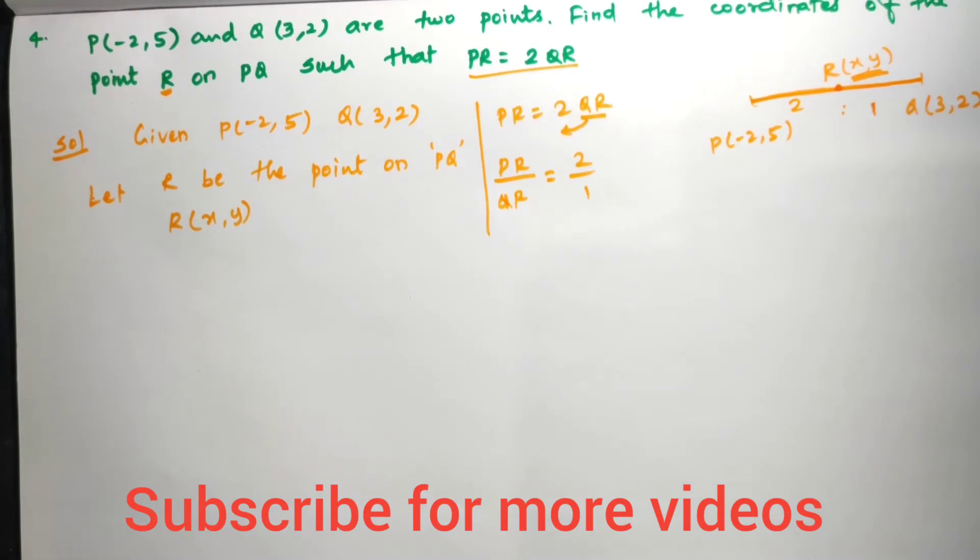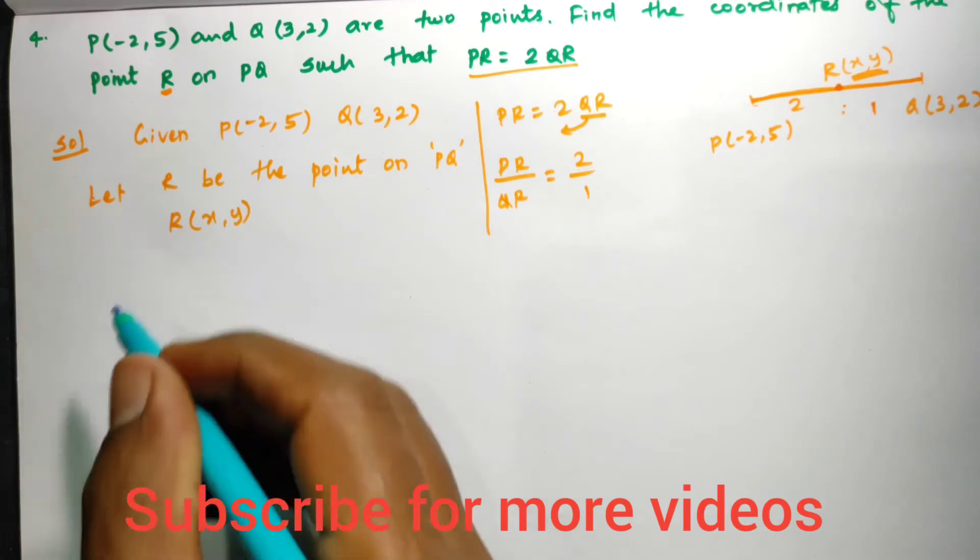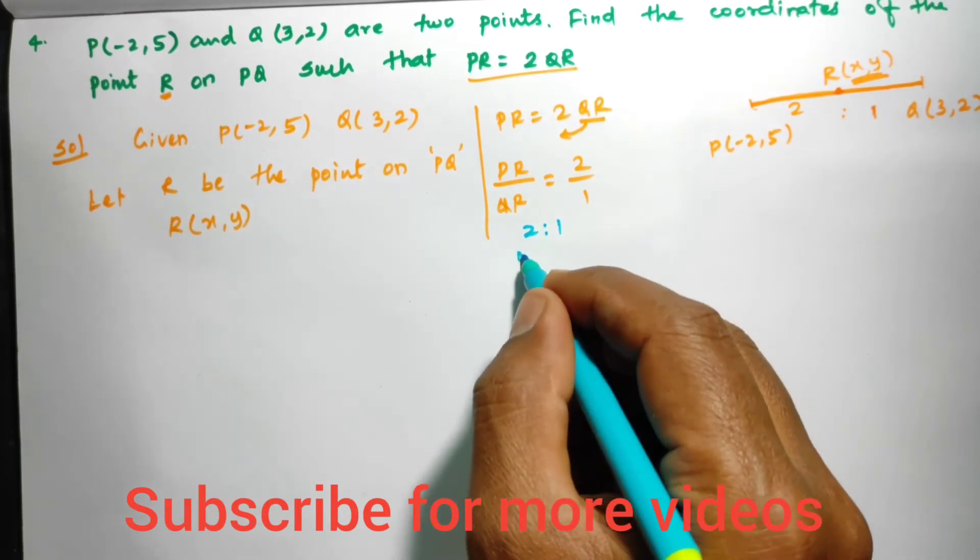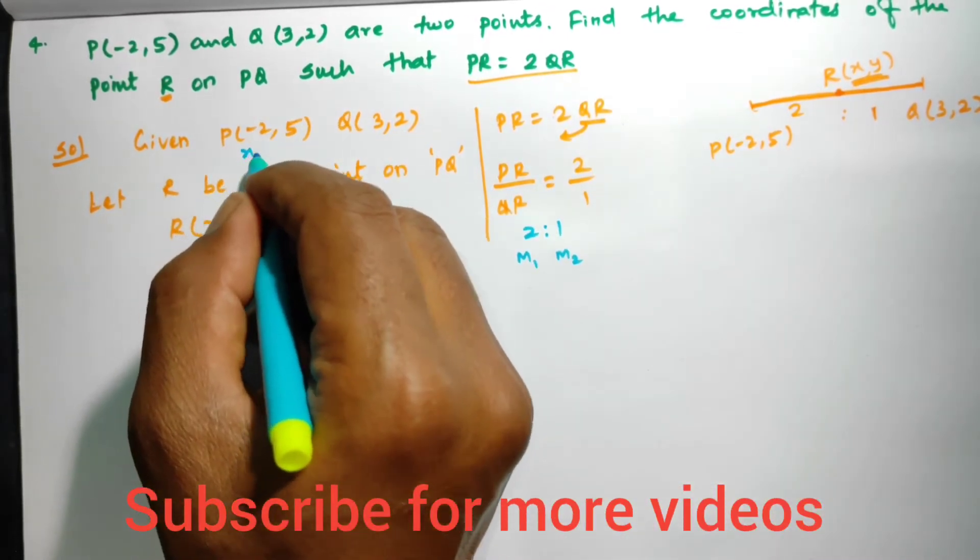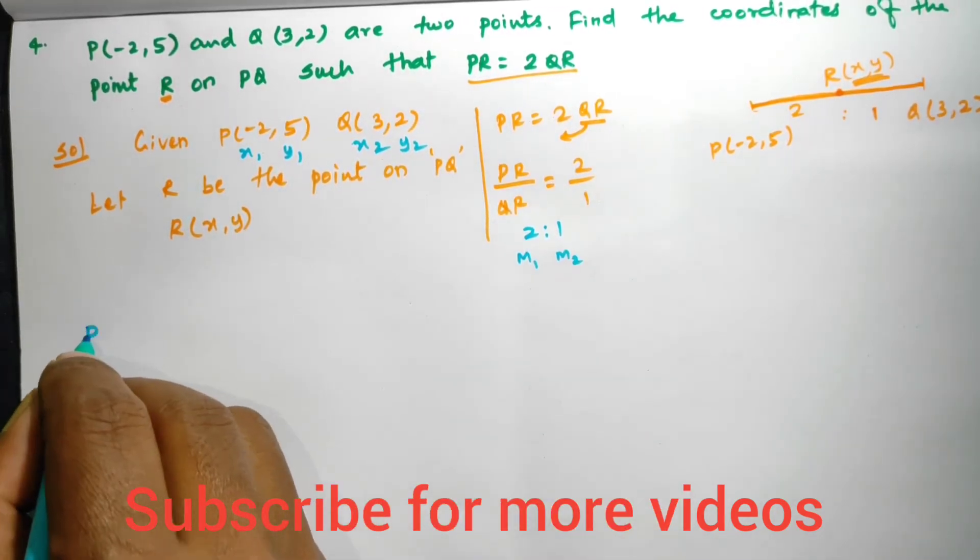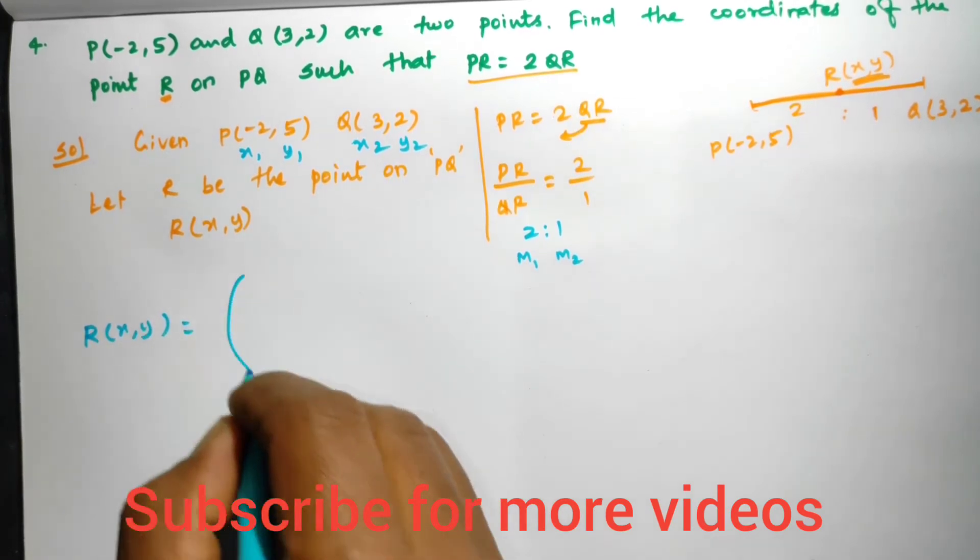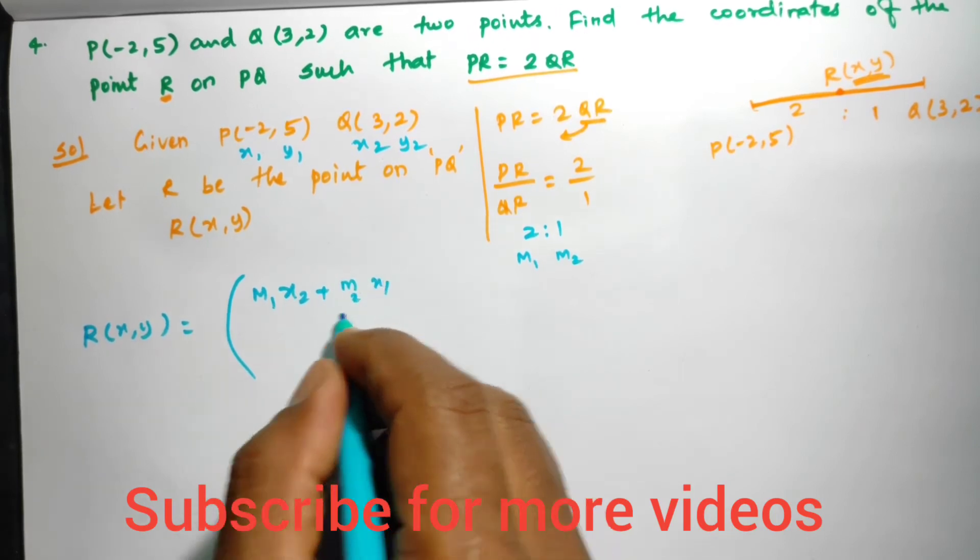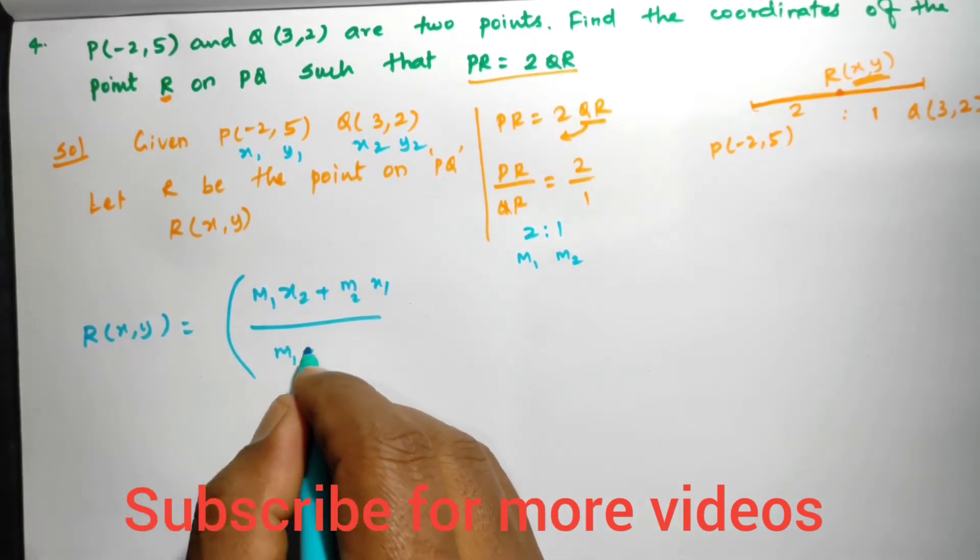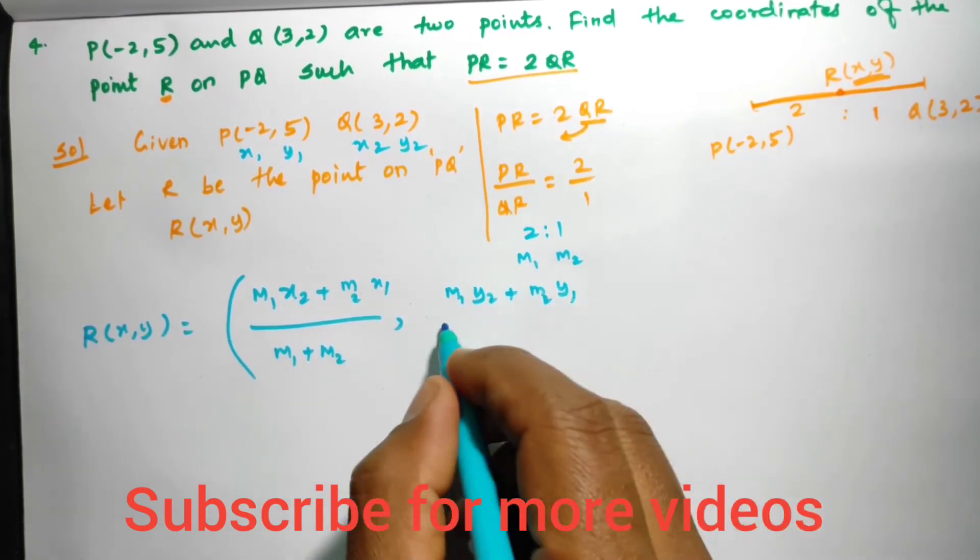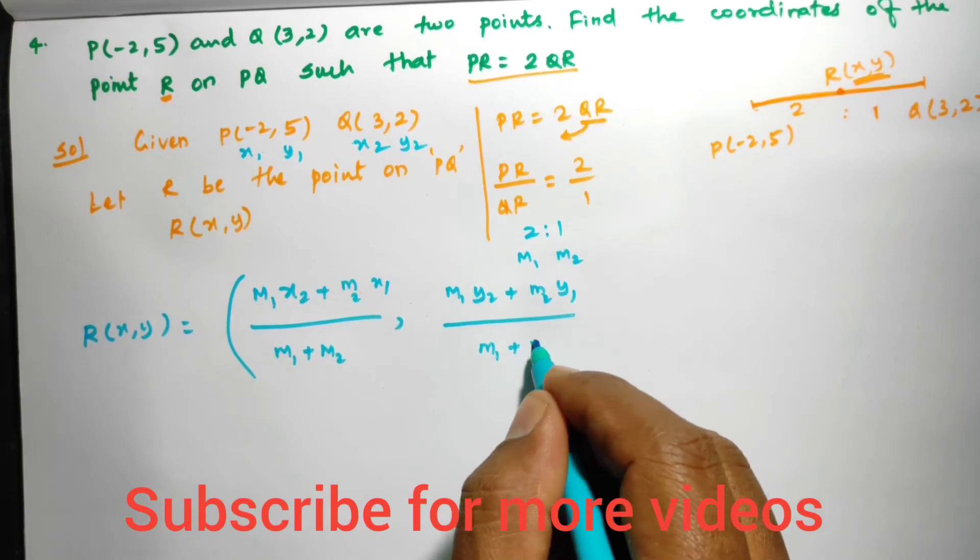Now we have two points and the ratio. Let's solve. This ratio is 2:1, so M1 = 2 and M2 = 1. The points are (x1, y1) and (x2, y2). The point of division formula R(x, y) is: (M1·X2 + M2·X1)/(M1 + M2), (M1·Y2 + M2·Y1)/(M1 + M2). Apply all the values to the formula.